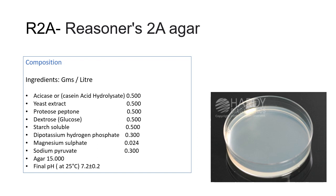The actual name of R2A medium is Reasoner's 2A agar. The ingredients in grams per liter are: casein acid hydrolysate, yeast extract, protease peptone, dextrose, soluble starch, dipotassium hydrogen phosphate, magnesium sulfate, and sodium pyruvate, with agar at pH 7.2 plus or minus 0.2.